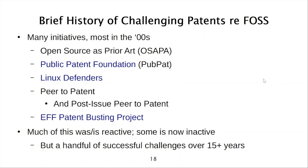I want to talk about the history of challenging patents that may constitute a threat to free and open source software. There were a number of initiatives launched primarily in the early to mid-2000s designed to either create prior art that could be used against threatening software patents, or to actually go out and try to invalidate these patents. A lot of this activity was reactive — essentially attempting to react to patents that already existed or were perceived as a threat, rather than being proactive. A lot of those initiatives have also become inactive, and the successful challenges over 15 years have been fairly limited.